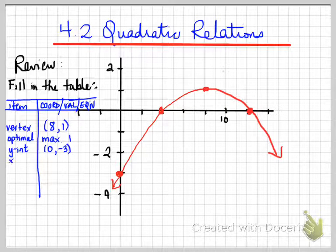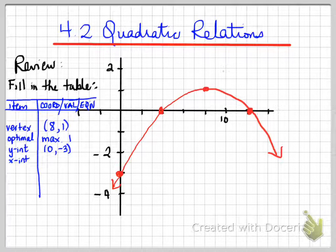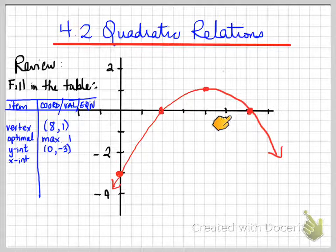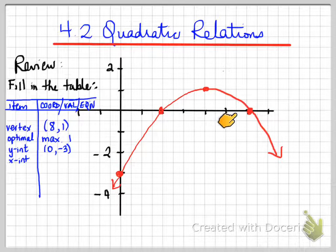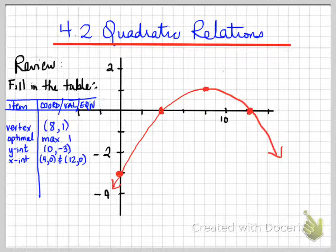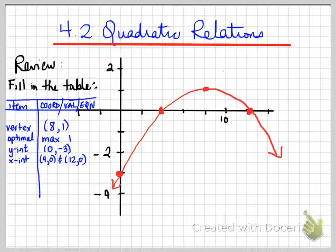Next: what is the x-intercept? Maybe there's 1, maybe there's 2, maybe there's none. The goal is to find the x-intercepts. Our x-intercepts are here and again here. This value is 4, this value is 12. The coordinates are written as (4, 0) and (12, 0). We write them out as separate coordinates, not as '4, 12', because that's two separate points.